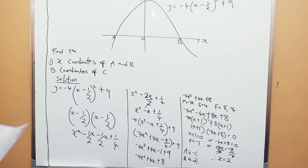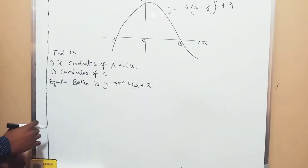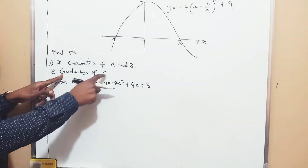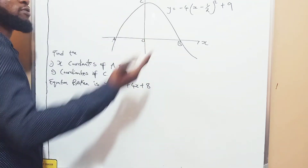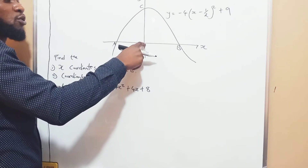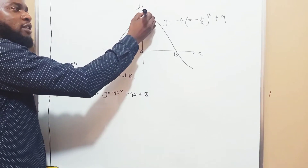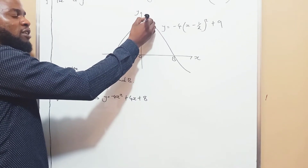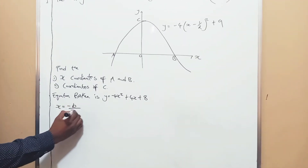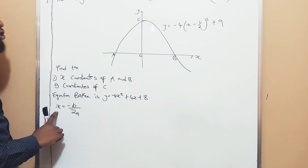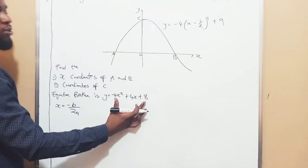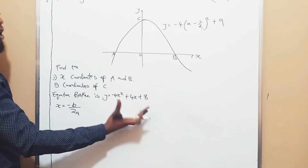Let's look at finding the coordinates of c. The question says find the coordinates of c. You can see that the x-coordinate of c is 0. But the question is: what is this highest point? This is known as your maximum. So this is the formula — x equals negative b over 2a. Once we find our x, we are going to replace it into the equation. This equation has been broken down. You saw how I broke it down.